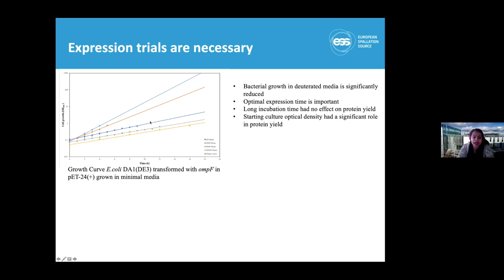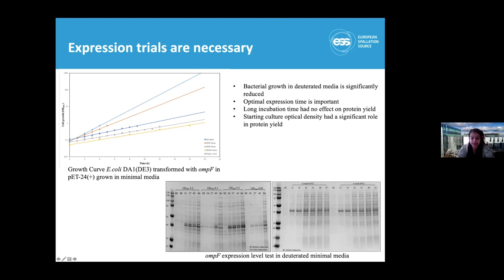We compared cells grown in different media with different carbon sources. We also optimized other factors: starting the culture at higher OD instead of 0.1 gave higher protein yield, along with optimizing IPTG concentration to get maximum protein yield, because protein yield is also reduced in deuterium media. So it is good to optimize as much as possible to get the highest protein yield.